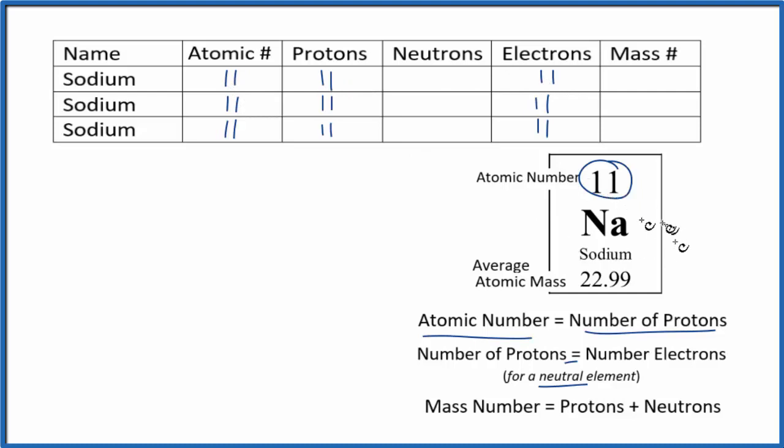So we said sodium is neutral. What that means is it's just going to be Na. If you see something like Na+, that's an ion. That's not a neutral element. So we're only talking about neutral elements, like the ones on the periodic table. Protons and electrons are equal.